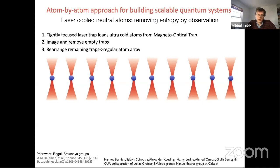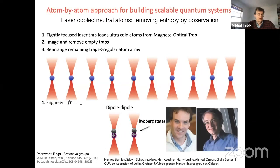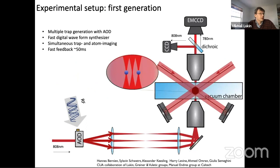After configuring the atoms, we interrogate them with lasers. To make them interact, we excite these atoms into so-called Rydberg states — states with high principal quantum number — such that atoms separated by even a few microns can interact extremely strongly. This is our effort within the Harvard-MIT Center for Ultracold Atoms, a collaboration with Vladan Vuletic and Markus Greiner's group.